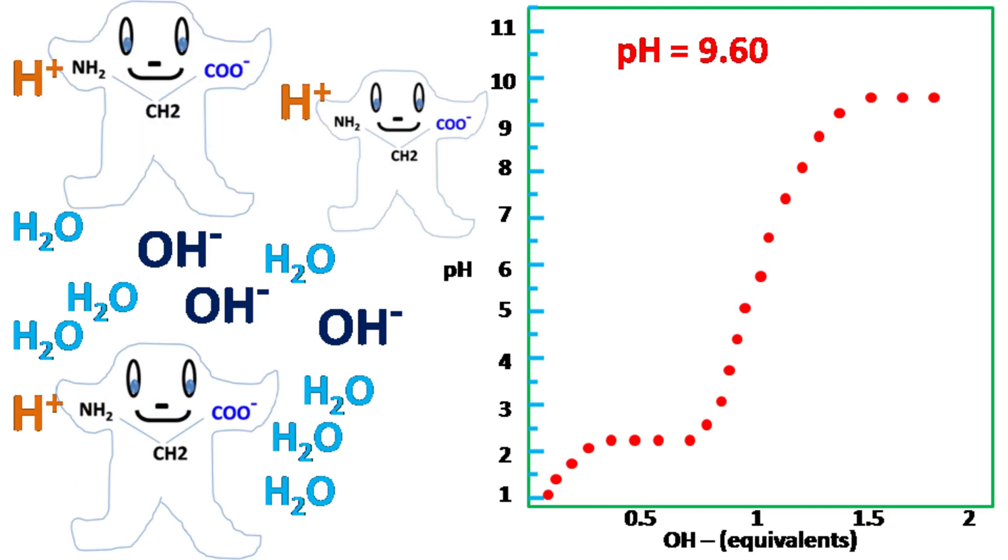As the ammonium group of so many glycine molecules donates its H plus ion, the pH remains constant at 9.6.